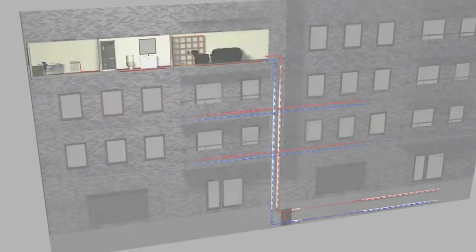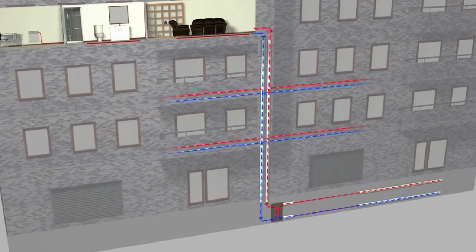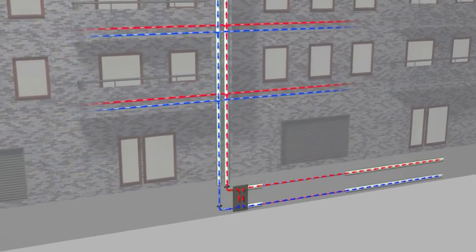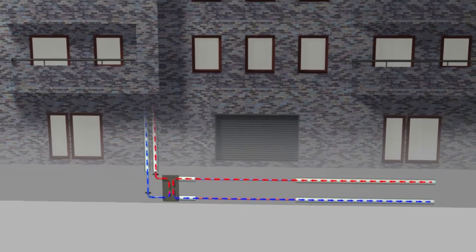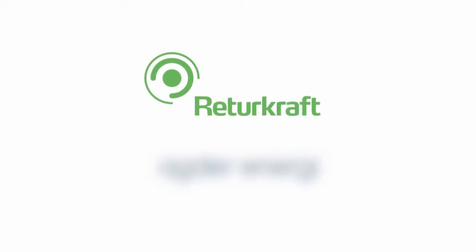The cooled water is then circulated back to the customer's substation to be reheated. On the other side of the heat exchanger, the district heating water has now delivered its thermal energy and returns to Retourcraft.